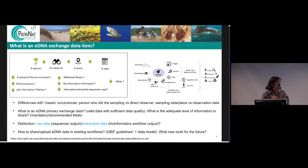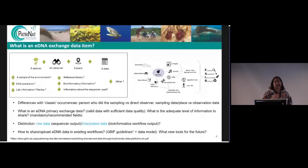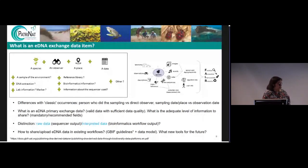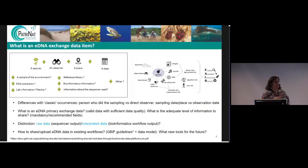We also make a distinction between raw data and interpreted data. Interpreted data is what comes out of the bioinformatics workflow, but sometimes there's an issue at an earlier step, so we need to be able to go back to the raw data to re-analyze the sampling if needed. Finally, we need to be able to share and upload eDNA data in existing workflows, following GBIF guidelines. We also have high hopes for the new GBIF data model to answer questions about data mapping and standards, and we're excited about the new GBIF tool for eDNA data.